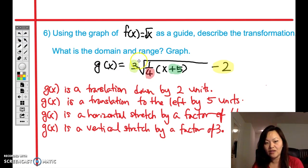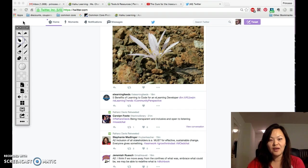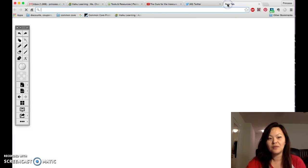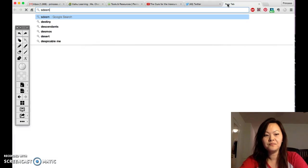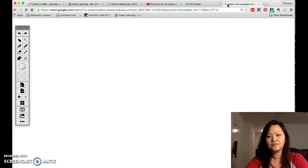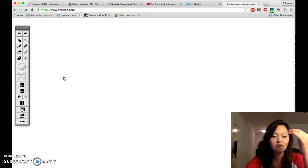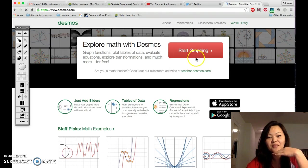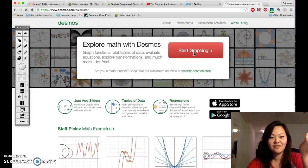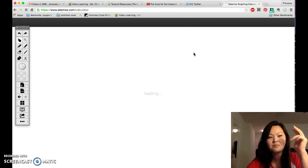Now we're going to talk about the domain and range, but in order to talk about the domain and range, we're going to first graph it. And I told you the best way is to go into Desmos. We talked about this in class, so it's really important that you punch the correct graph, I mean the correct buttons.